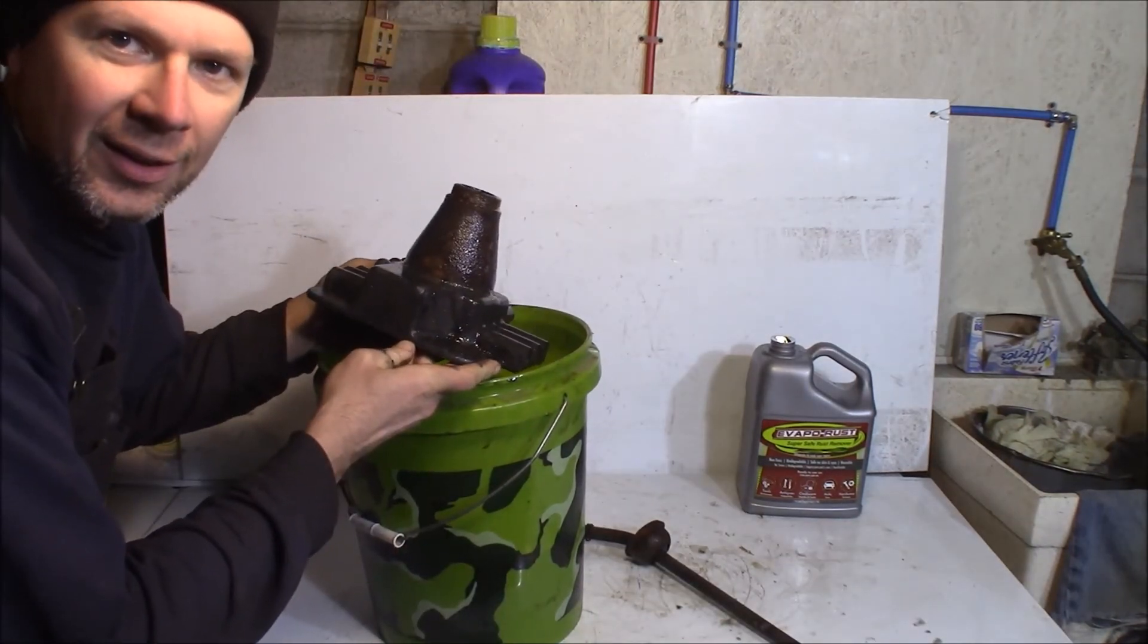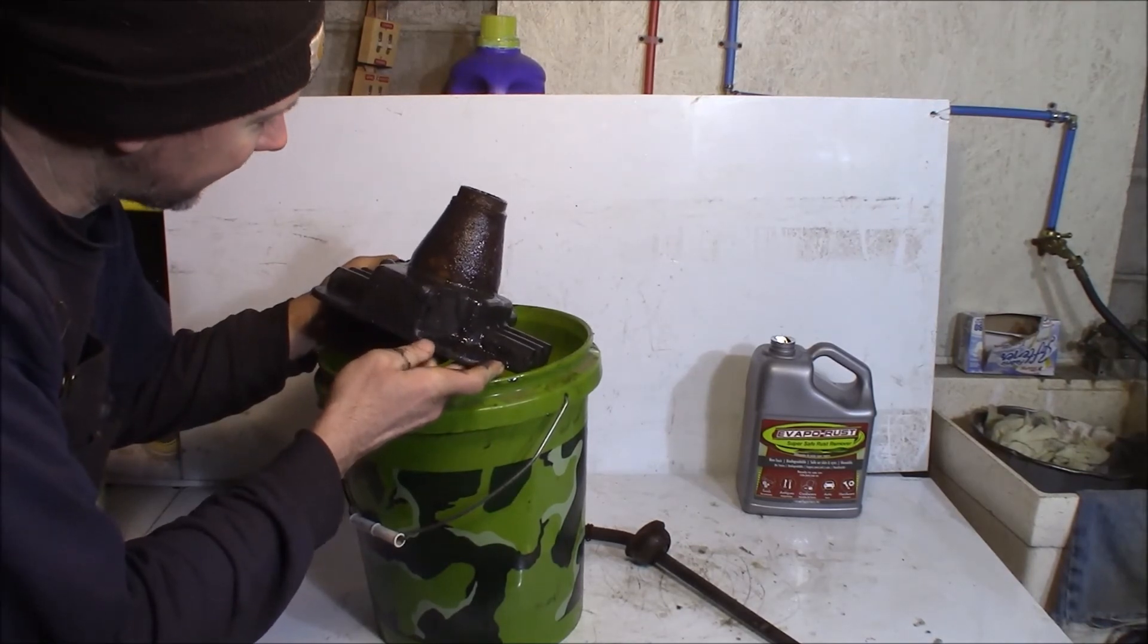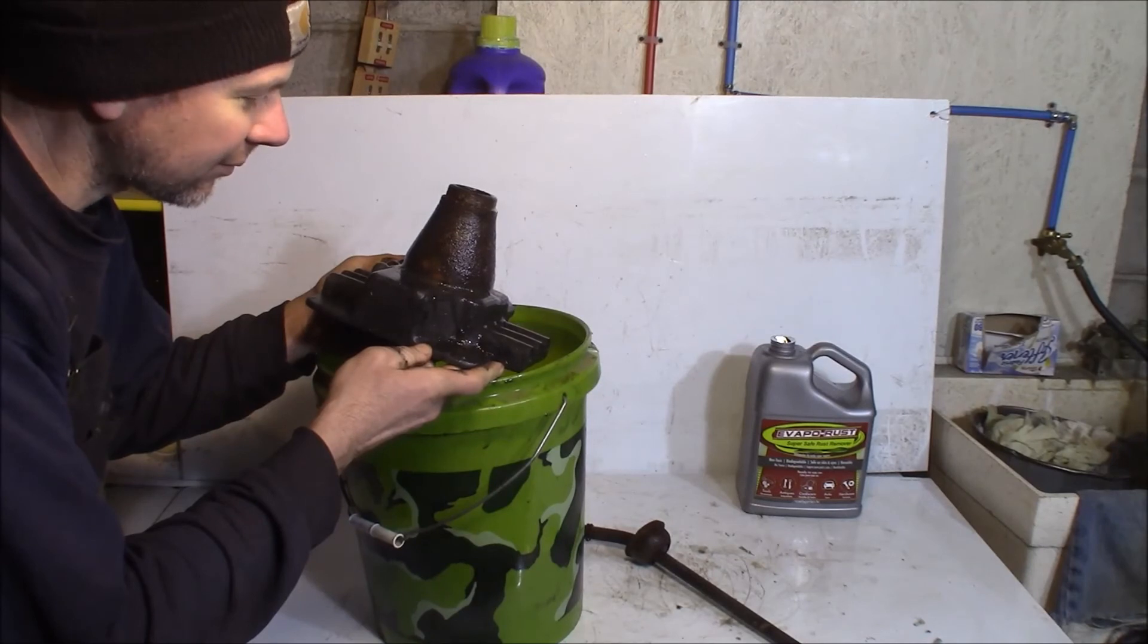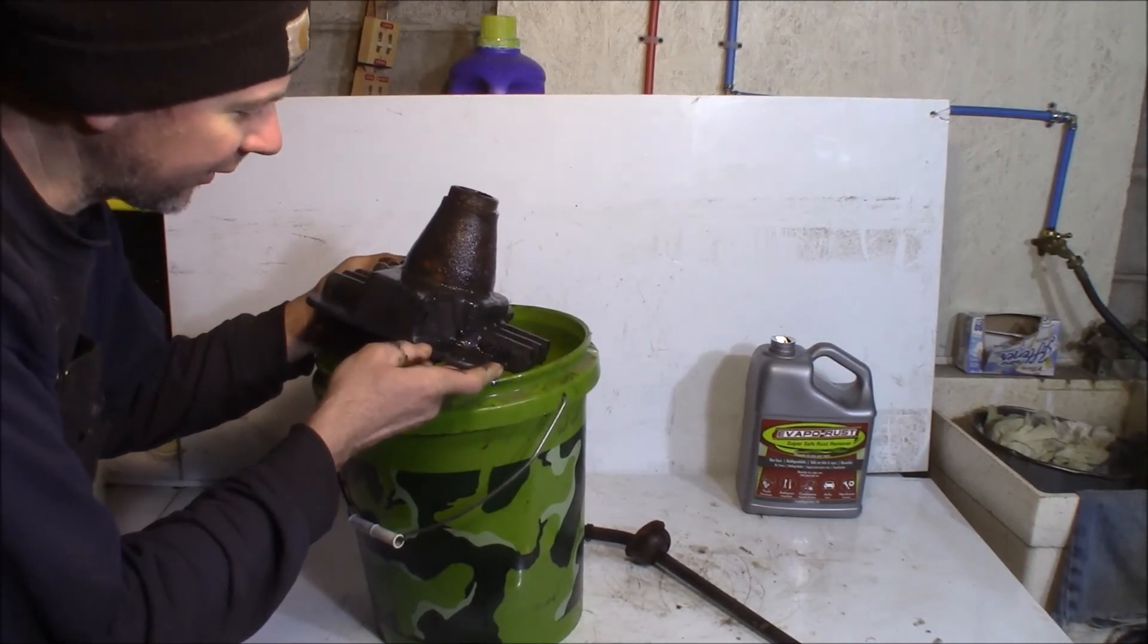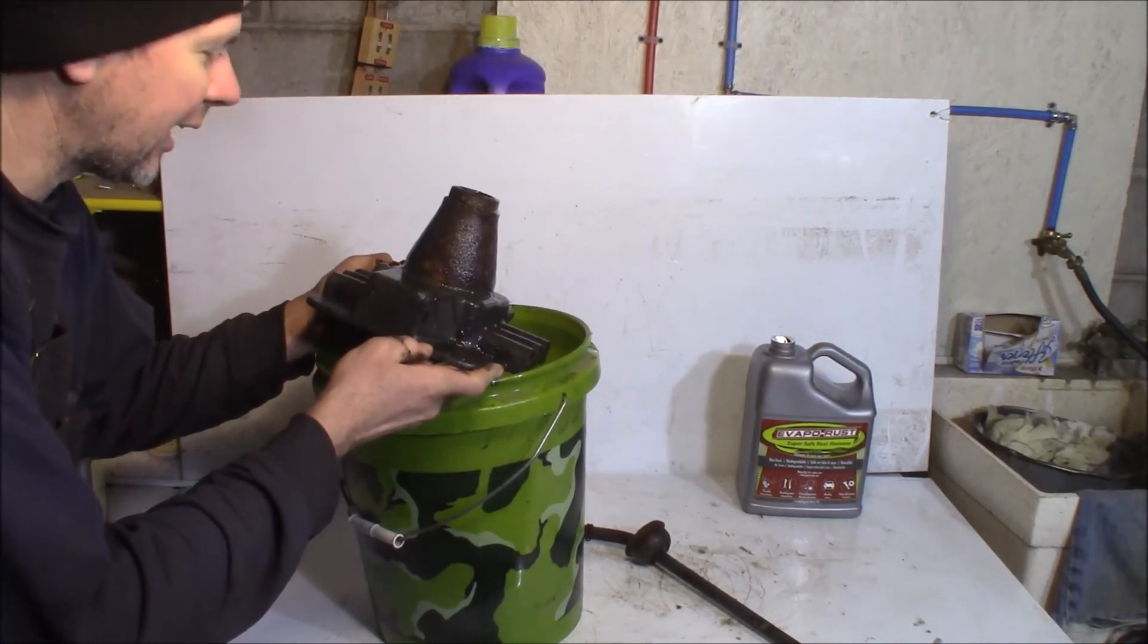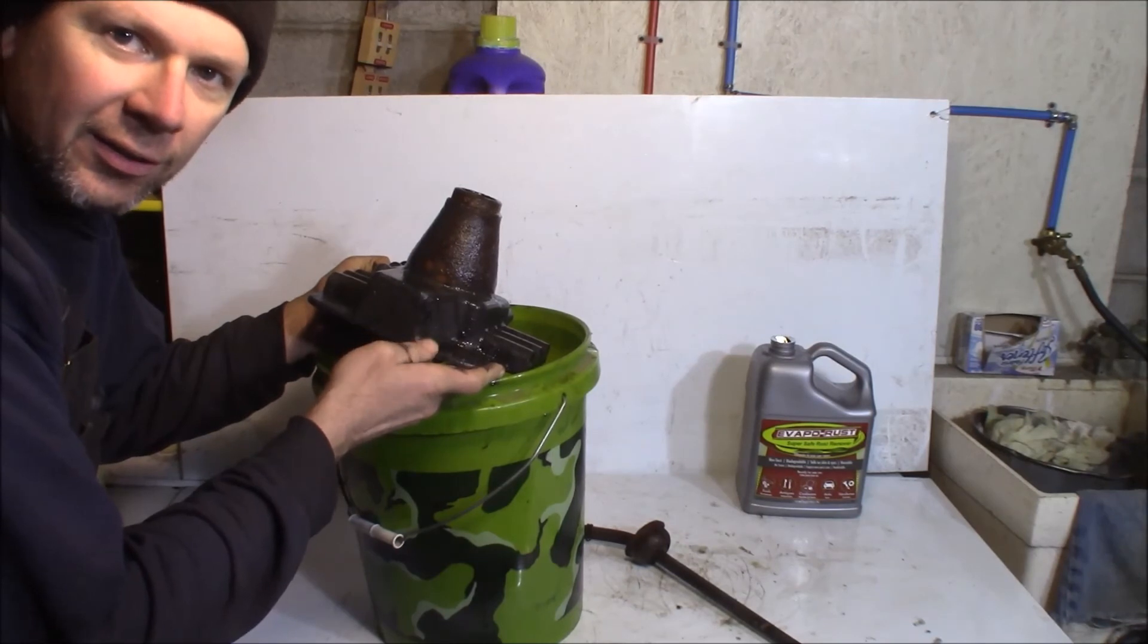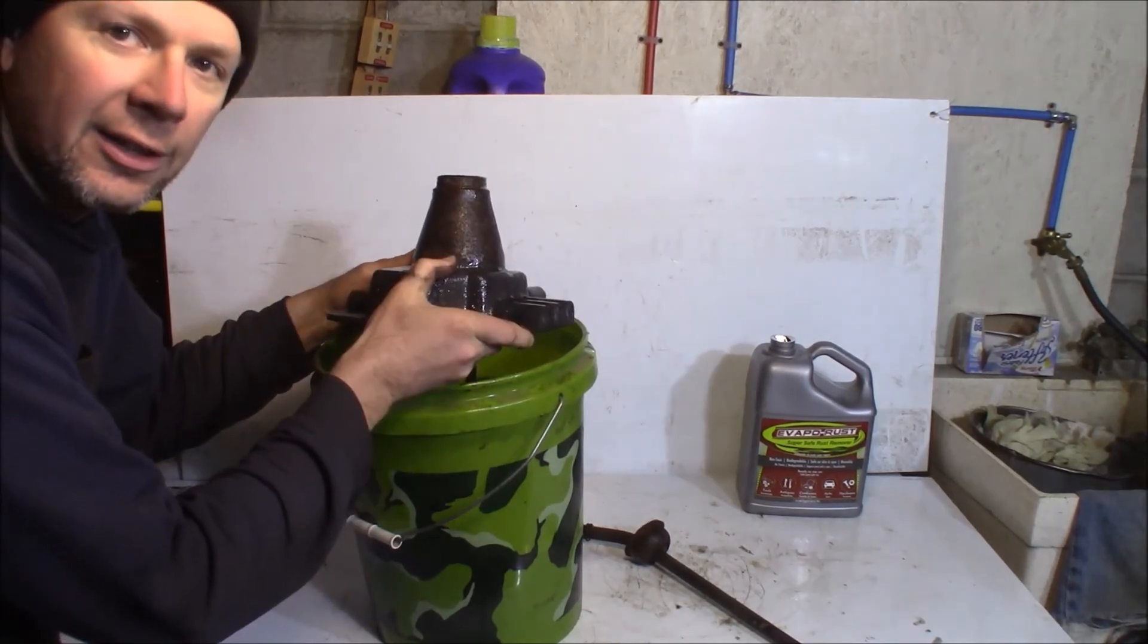So my conclusion is that Evaporust is awesome. Look at this. This thing was severely rusted and it cleaned it right up. So, it's taken about four days worth of soaking here but it's worth it. For $50 worth of material, I got two gallons and I completely de-rusted this shifter for my Ford Doodlebug project. So, I think it works great. This stuff's awesome. I'm glad I did this.